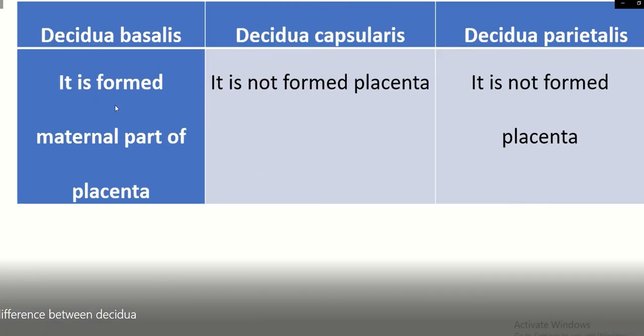Decidua basalis forms the maternal part of the placenta. Decidua capsularis and decidua parietalis do not form the placenta.